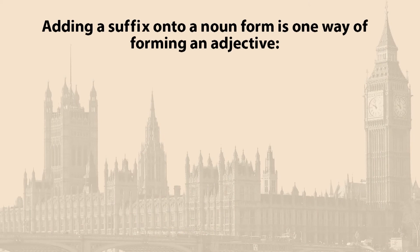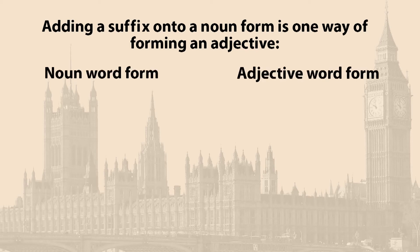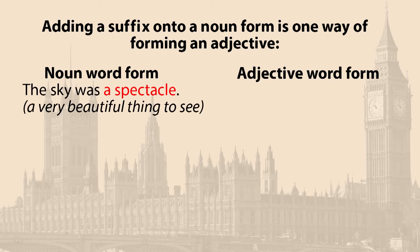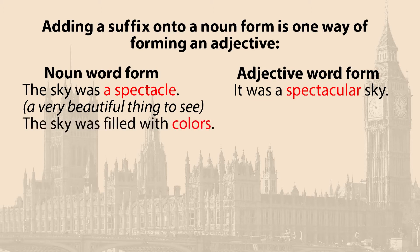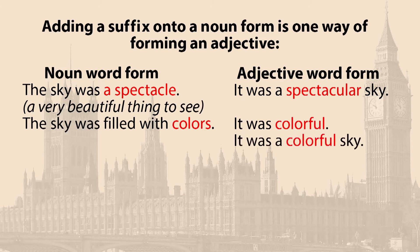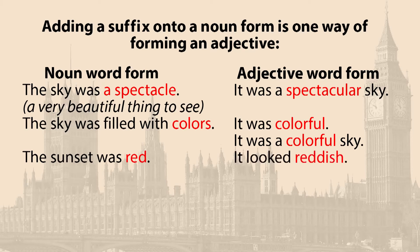Adding a suffix onto a noun form is one way of forming an adjective. For example, as a noun: 'The sky was a spectacle, a very beautiful thing to see.' As an adjective: 'It was a spectacular sky.' The sky was filled with colors — it was colorful, a colorful sky. The sunset was red; it looked reddish. It was a reddish sky.